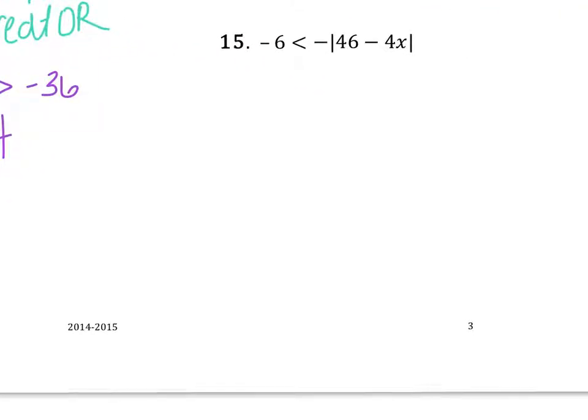Same thing over here, guys. I need to make sure that my absolute value bars are isolated. Well, I see a negative sign, which is really like saying negative 1 times that. So let's divide both sides by negative 1. I have to make sure when I divide by a negative number, I flip the sign.